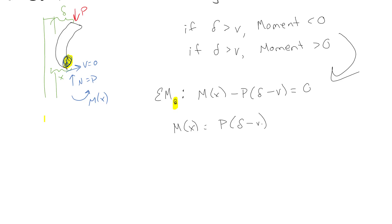That takes care of the sign convention — if delta is larger it's positive, if displacement is larger it's negative. We're going to use the same approach as before: EI times d²v/dx² equals the moment expression, so EI d²v/dx² equals P(delta minus v).